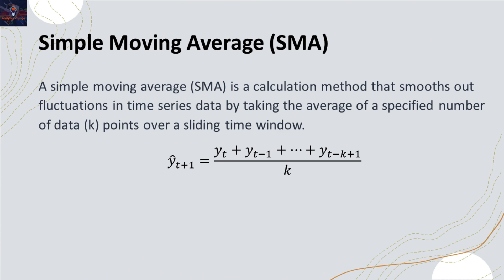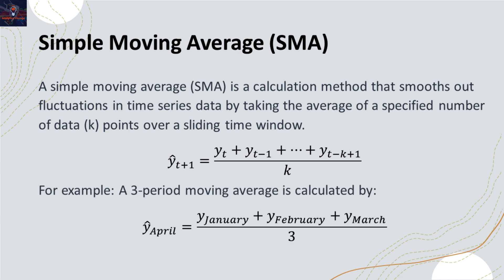Now that we've got a handle on time series data, let's move on to the star of the show: simple moving average. Simple moving average is a powerful tool used in analyzing time series data. This is a technique that smooths out data by calculating the average of a set of values within a specific time frame. It is an estimate of the demand for a future time period, and we get this estimate by averaging the demand for a specified number of data points. For example, if you want to use simple moving average to predict the sales of a company for April based on the past three months, you can do that by averaging the sales of January, February, and March.